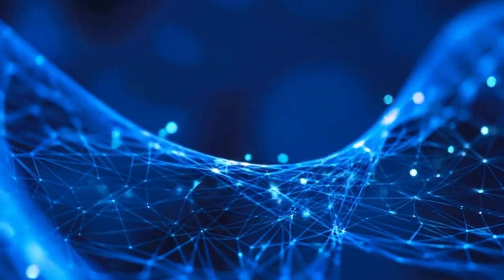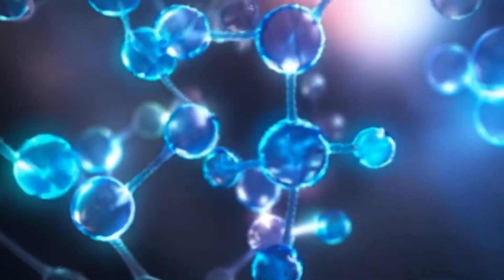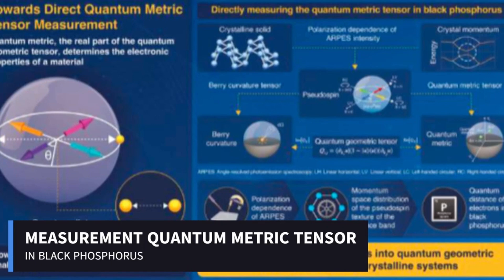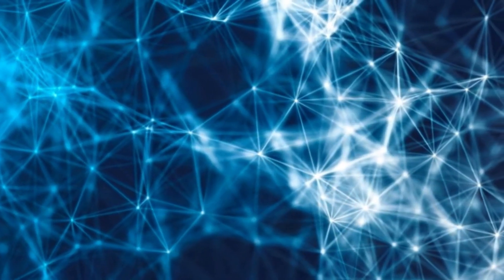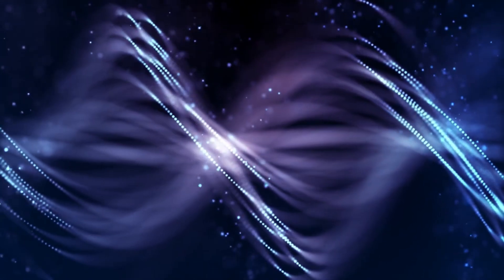The mathematical object that describes this landscape is known as the quantum metric. It measures how far apart quantum states are from one another and how rapidly they change. This distance is not measured in meters, but in how much an electron's quantum character shifts as conditions change. The quantum metric was introduced theoretically about 20 years ago. From the beginning, it was clear that it could influence a wide range of physical phenomena, including electrical transport, optical responses, and superconductivity.